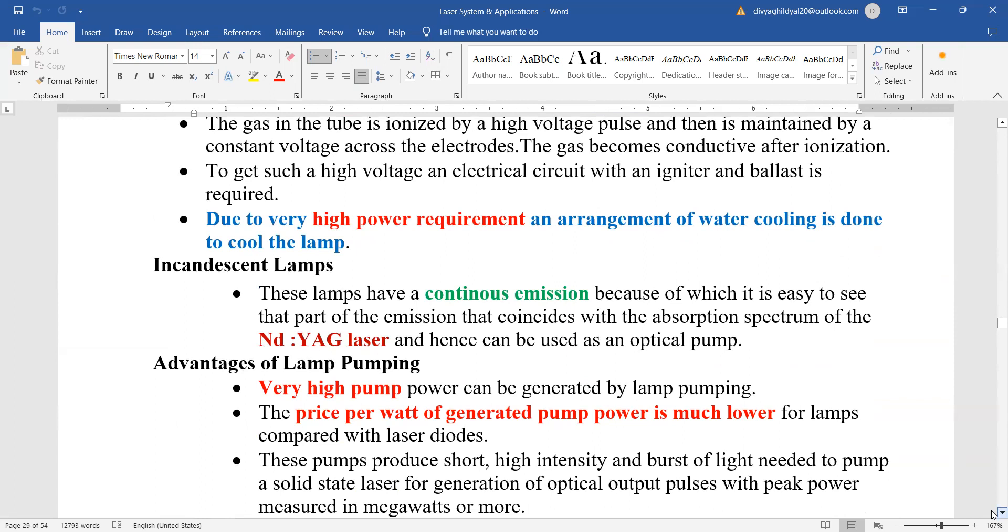Incandescent lamps, these lamps have a continuous emission because of which it is easy to see that part of the emission that coincides with the absorption spectra and hence can be used as an optical pump.